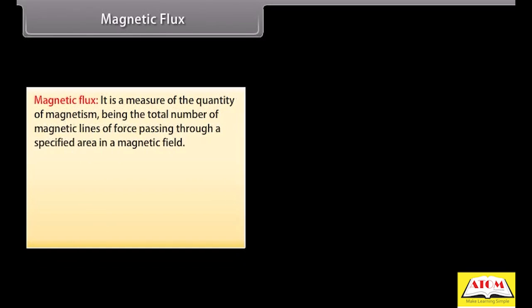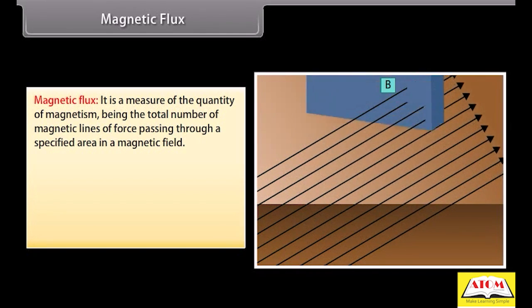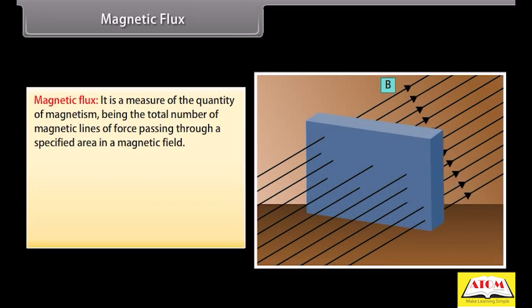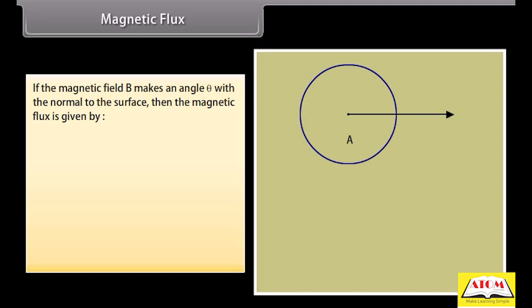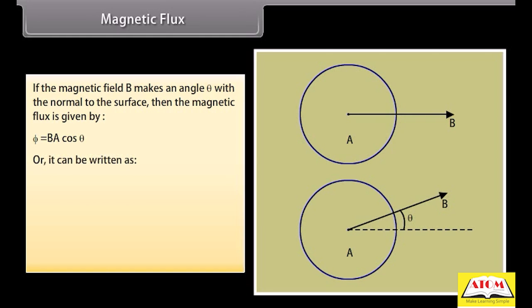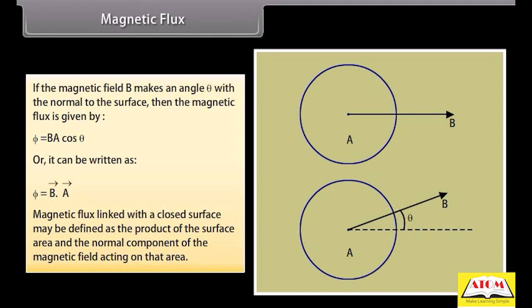Magnetic flux is a measure of the quantity of magnetism — the total number of magnetic lines of force passing through a specified area in a magnetic field. If a uniform magnetic field B acts perpendicular to the plane surface, the magnetic flux through area A is B times A. If the magnetic field B makes an angle theta with the normal to the surface, then the magnetic flux is BA cos theta, or the dot product of B and A. Magnetic flux linked with a closed surface is the product of the surface area and the normal component of the magnetic field acting on that area.